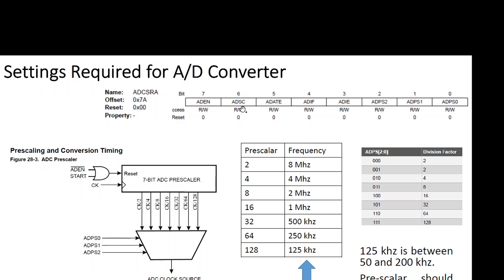In single conversion mode, we have to set the ADSC bit to 1 every time we need a conversion. But in free running mode, we set the ADATE bit to 1, and we only need to enable the conversion once at the beginning of the code. After that, the microcontroller will keep converting the analog value at the particular channel continuously. Whenever a conversion finishes, it generates an interrupt, and then immediately begins the next conversion. This is the advantage of free running mode — we do not have to keep setting the ADSC bit to 1 each time.